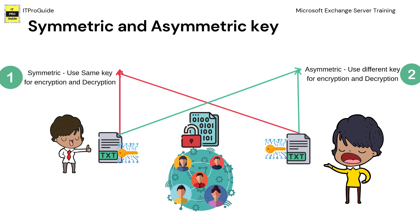There are two types of encryption available. The first is symmetric encryption, which means both parties involved in the communication use the same key for encryption and decryption. The second is asymmetric encryption, which means the parties use different keys — the sender uses one key and the recipient uses another key for encryption and decryption.